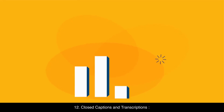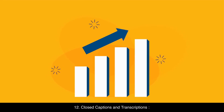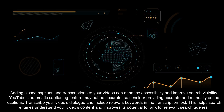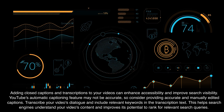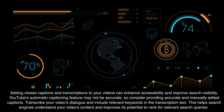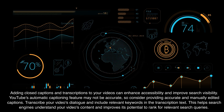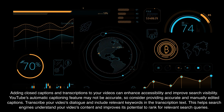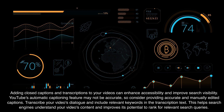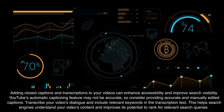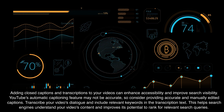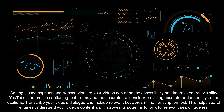12. Closed Captions and Transcriptions. Adding closed captions and transcriptions to your videos can enhance accessibility and improve search visibility. YouTube's automatic captioning feature may not be accurate, so consider providing accurate and manually edited captions. Transcribe your video's dialogue and include relevant keywords in the transcription text. This helps search engines understand your video's content and improves its potential to rank for relevant search queries.